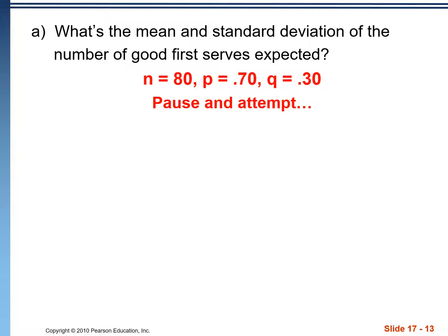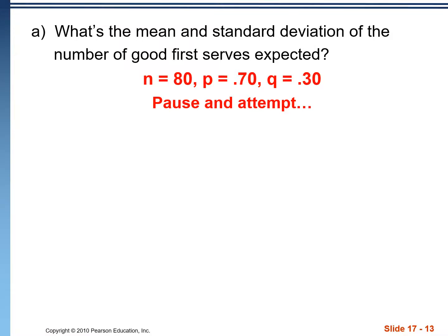The mean is N times P: 80 × 0.7 = 56 serves. The standard deviation is the radical of NPQ, giving a standard deviation of 4.099, which we'll call 4.1.